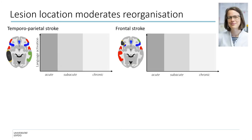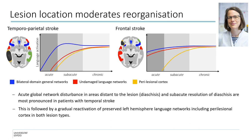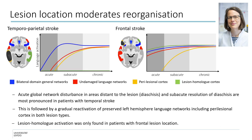To summarize our main findings: First, we found that acute global network disturbance in areas distant to the lesion — that is, diaschesis — and subacute resolution of diaschesis are most pronounced in patients with temporal stroke. Second, this observation is followed by a gradual reactivation of preserved left hemisphere language networks including paralesional cortex in both lesion types. Third, lesion homologue activation was only found in patients with frontal lesion location, but not in right temporal cortex.